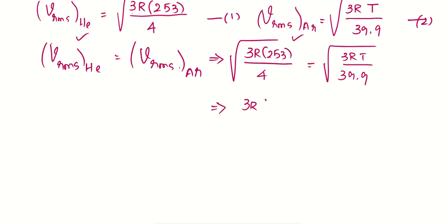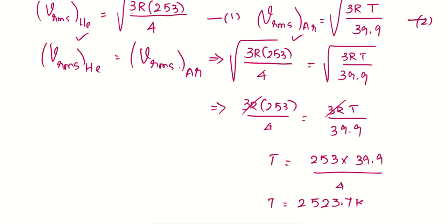Therefore, 3R times 253 divided by 4 equals 3RT divided by 39.9. The 3R will cancel. So T equals 253 times 39.9 divided by 4, and that will be equal to 2523.7 Kelvin. That's all, thank you.